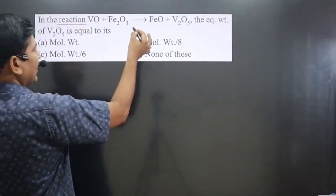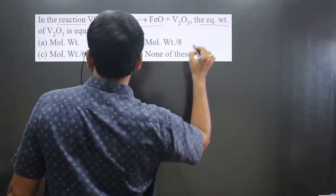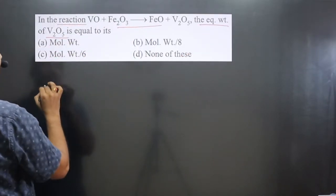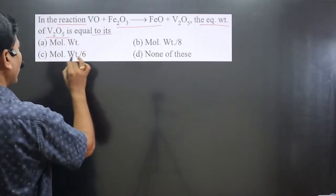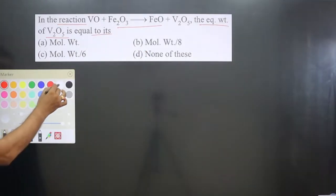The question says in the reaction, this chemical reaction is given here. It says the equivalent weight of vanadium pentoxide is equal to its—you can see these are the options given here. So the formula for the equivalent weight we have...